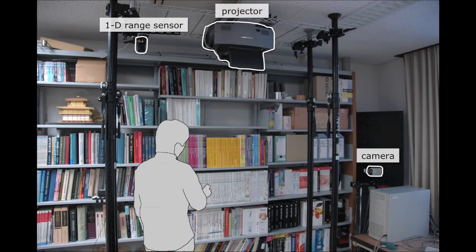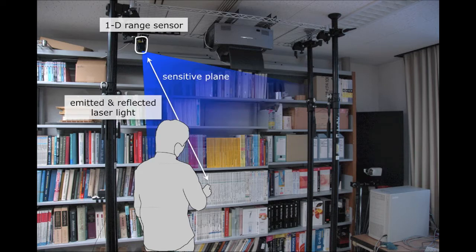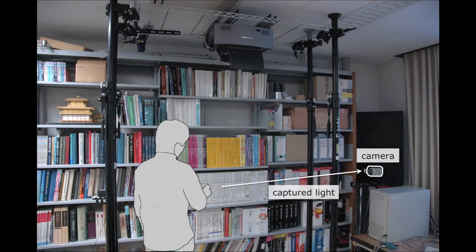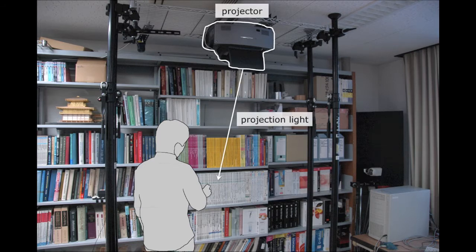The system consists of a time-of-flight 1D range sensor, a video camera, and a projector. The range sensor detects an intrusion object crossing the sensitive plane which is parallel to the front plane of the bookshelf. The camera observes the front space of the bookshelf, and the projector projects images onto the stored book spines.